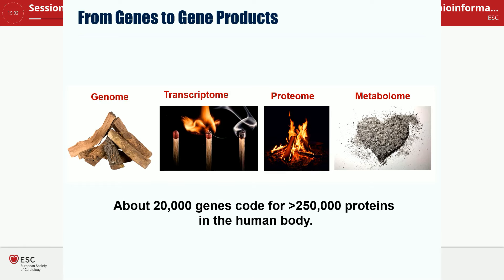Please bear in mind that from the 20,000 genes known to encode for proteins in the human genome, we currently estimate that there may be over a quarter of a million different proteins due to post-translational modifications and alternative splicing. So the complexity at the proteome level is far higher than at the genetic level, and the transcriptome is only poorly correlated to the actual protein level. In yeast, studies show about a 50% correlation between your RNA concentration and your actual protein level.